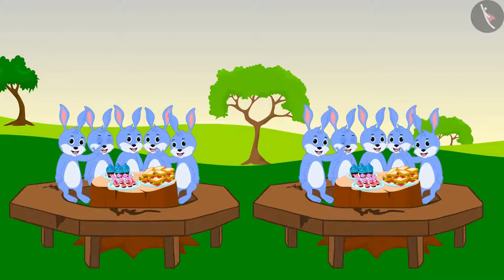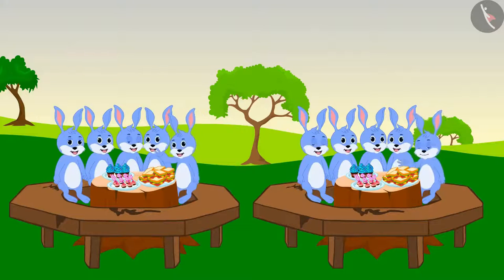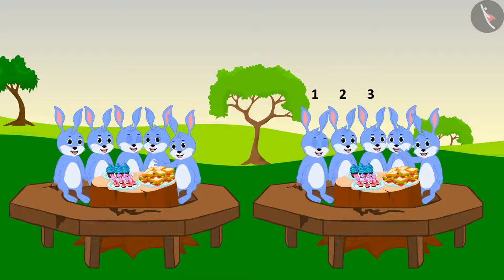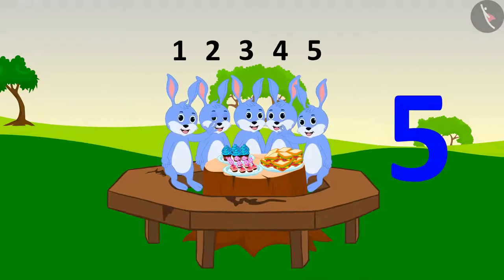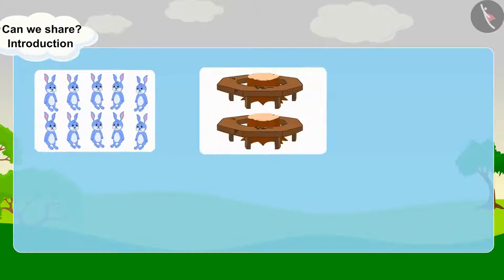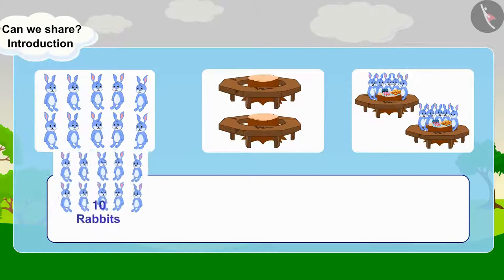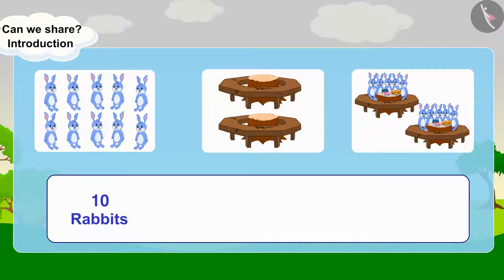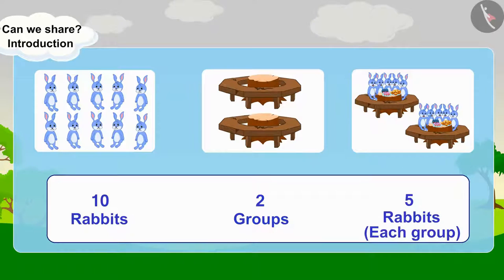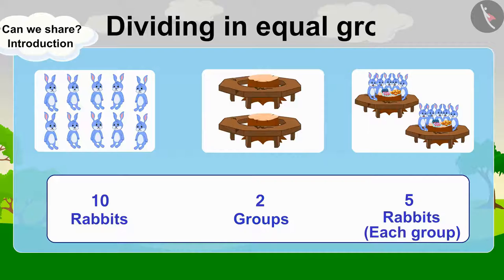There are ten rabbits and they are sitting in two groups. Each group has one, two, three, four, five rabbits seated in them. A total of ten rabbits are seated in two groups, each group having five rabbits. This is called dividing in equal groups.